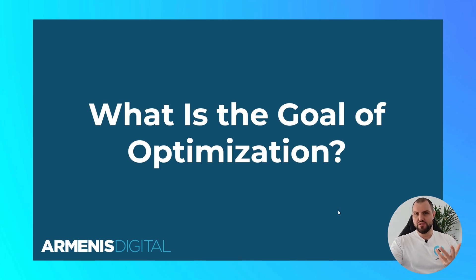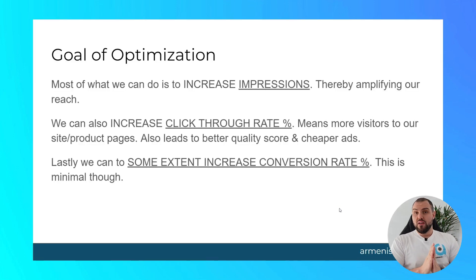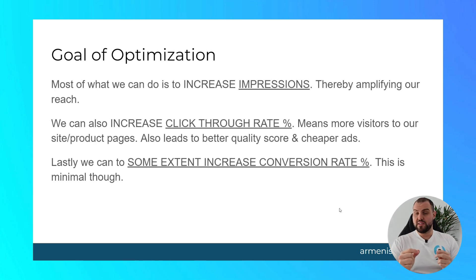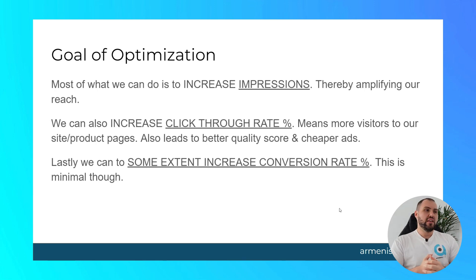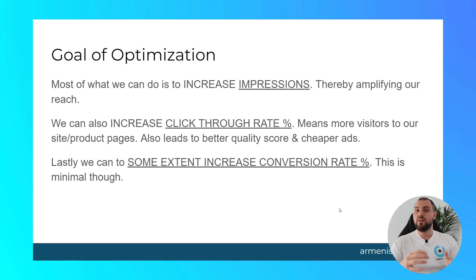So what is the goal of optimization? Because you hear this term a lot but no one actually describes it. With Google Shopping and Google Ads, what we're doing most of the time is trying to increase impressions — this amplifies our reach. Our optimizations are designed to increase the number of impressions we receive, hopefully over more products. We can also influence the click-through rate on our shopping ads, which means more visitors on our website and a better quality score, thereby cheaper ads. Lastly, we can also influence the conversion rate with our optimizations, though this is minimal compared to the other areas.